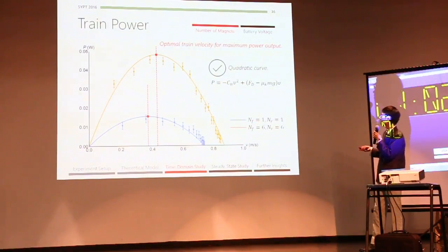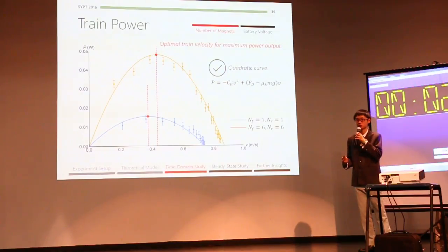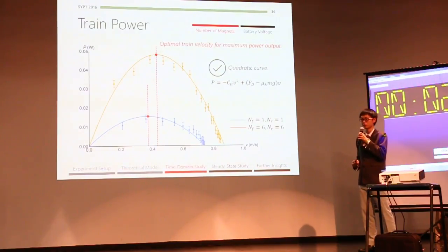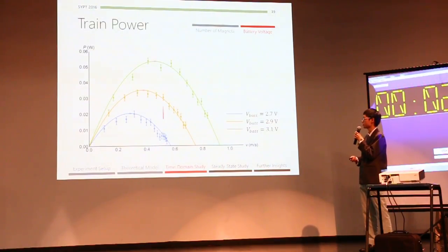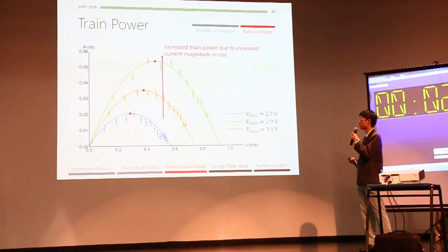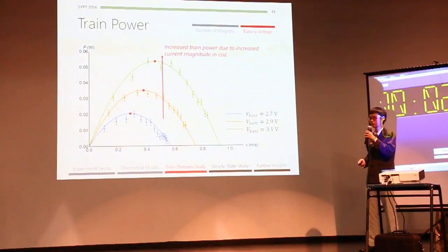Furthermore, we can plot power versus velocity for different battery voltages. And again, we see that as we increase the battery voltage, the power increases. This is because higher battery voltage results in a higher driving force.